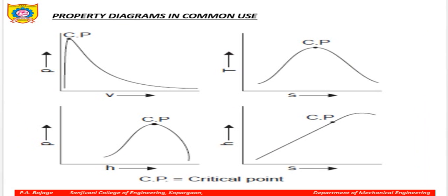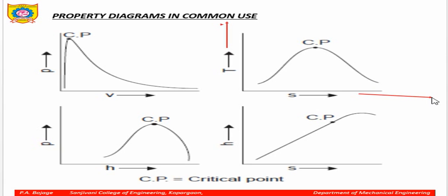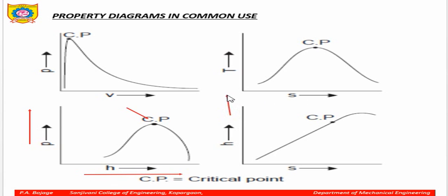The property diagrams in common use are highlighted here. The first very commonly used property diagram is the PV diagram — pressure on the y-axis and volume on the x-axis. Similarly, in the TS diagram you have temperature on the y-axis and entropy on the x-axis. Everywhere you can see the critical point and a dome-shaped curve. The pH diagram has pressure on the y-axis and enthalpy on the x-axis. The HS diagram, also called the Mollier diagram, has enthalpy on the y-axis.